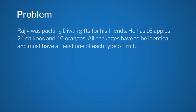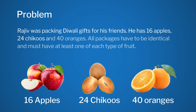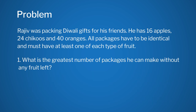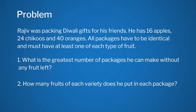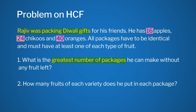Let us take the following example. Rajiv was packing Diwali gifts for his friends. He has 16 apples, 24 chikus, and 40 oranges. All packages have to be identical and must have at least one of each type of fruit. What is the greatest number of packages he can make without any fruit left? How many fruits of each variety does he put in each package? We will check with the words I told you — here we have to group the fruits and the word greatest appears. So obviously we have to find the HCF of 16, 24, and 40.